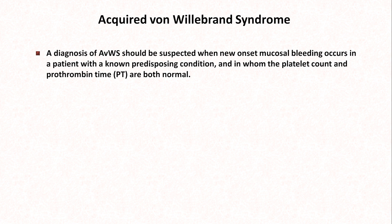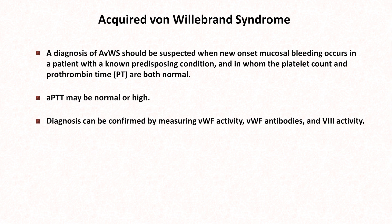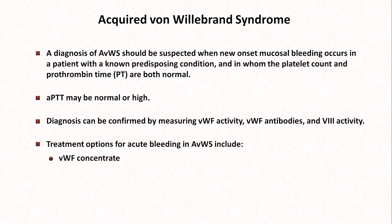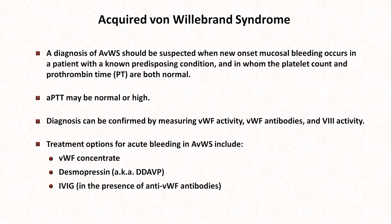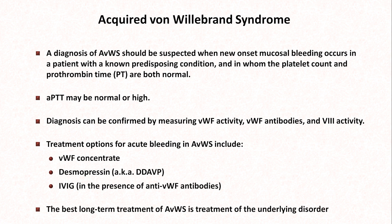As with inherited von Willebrand disease, the PTT may be normal or elevated. Diagnosis can be confirmed by measuring von Willebrand factor activity, checking for von Willebrand factor antibodies, or testing factor VIII activity. Treatment options include von Willebrand factor concentrate, desmopressin, and if anti-von Willebrand antibodies are present, IVIG. The best long-term treatment of acquired von Willebrand syndrome is, of course, treatment of the underlying disorder.